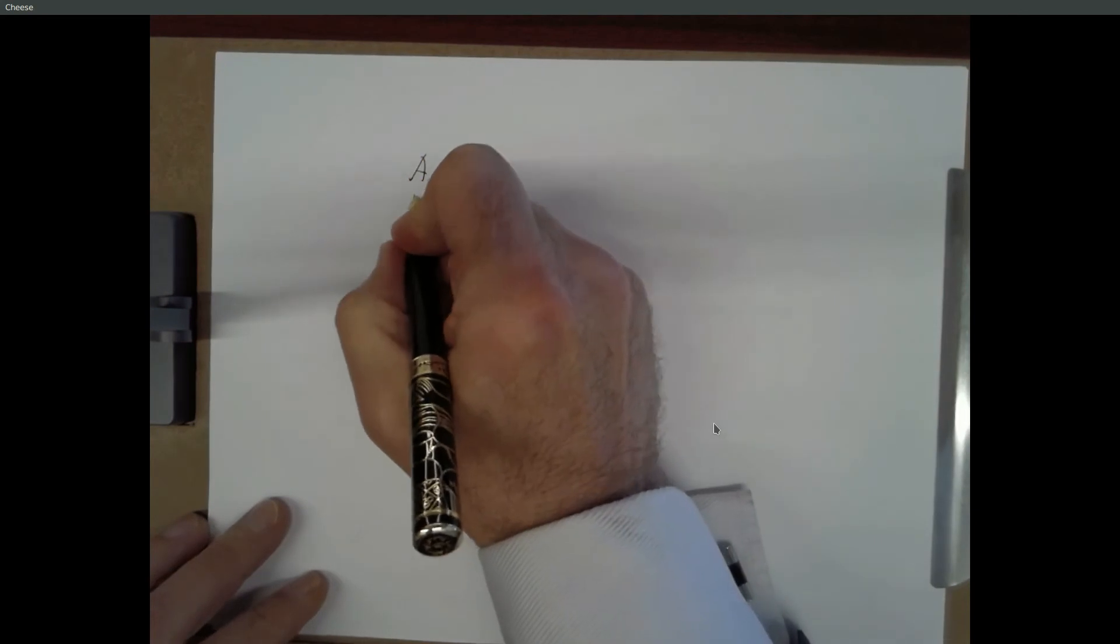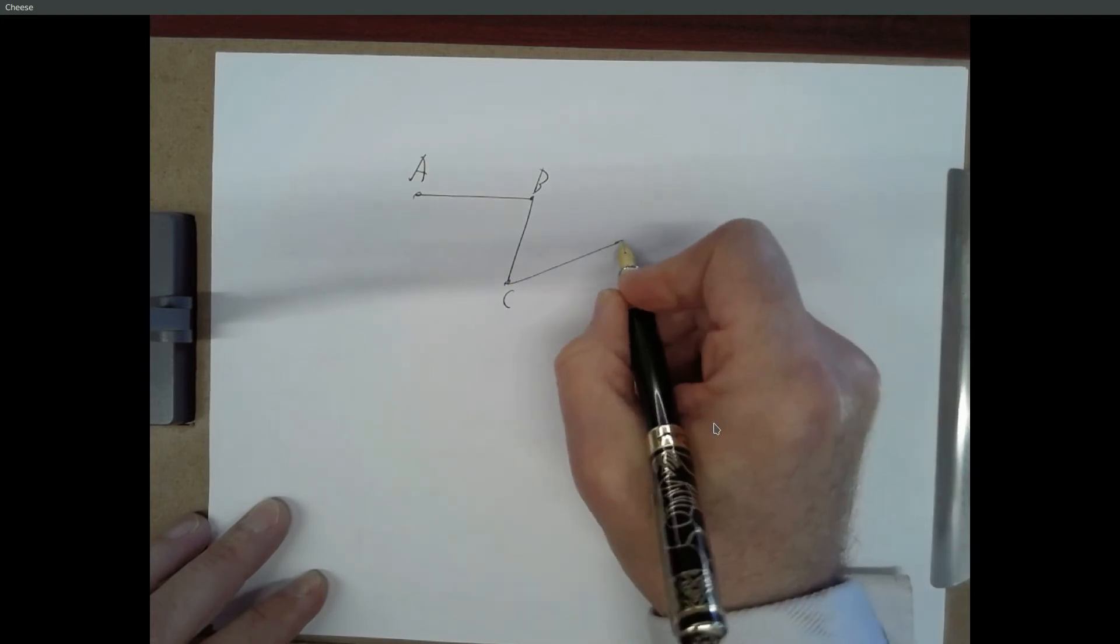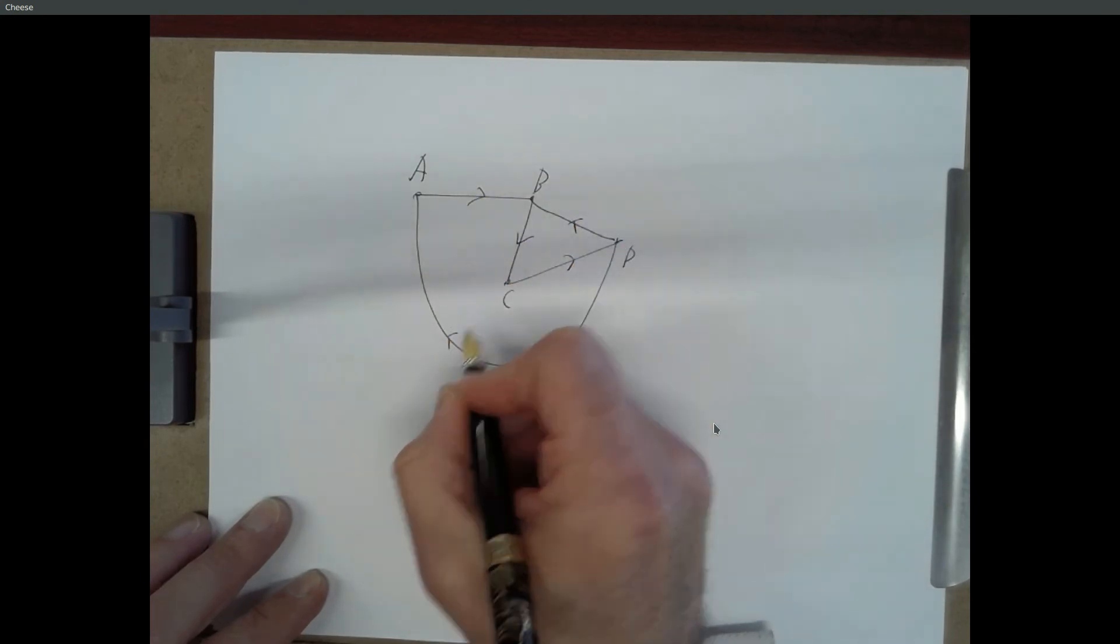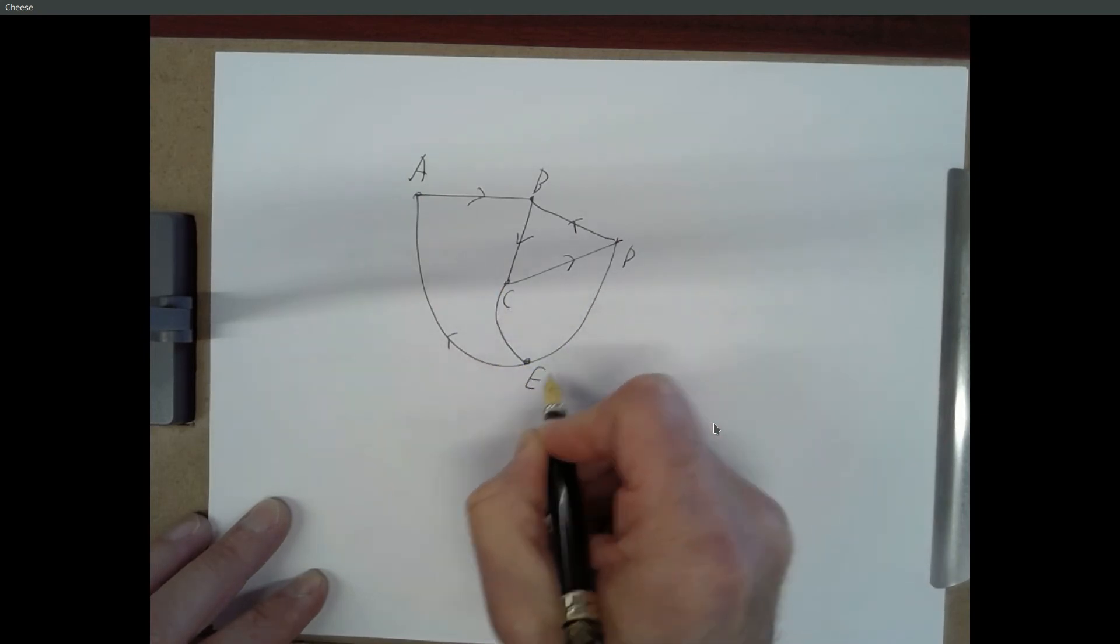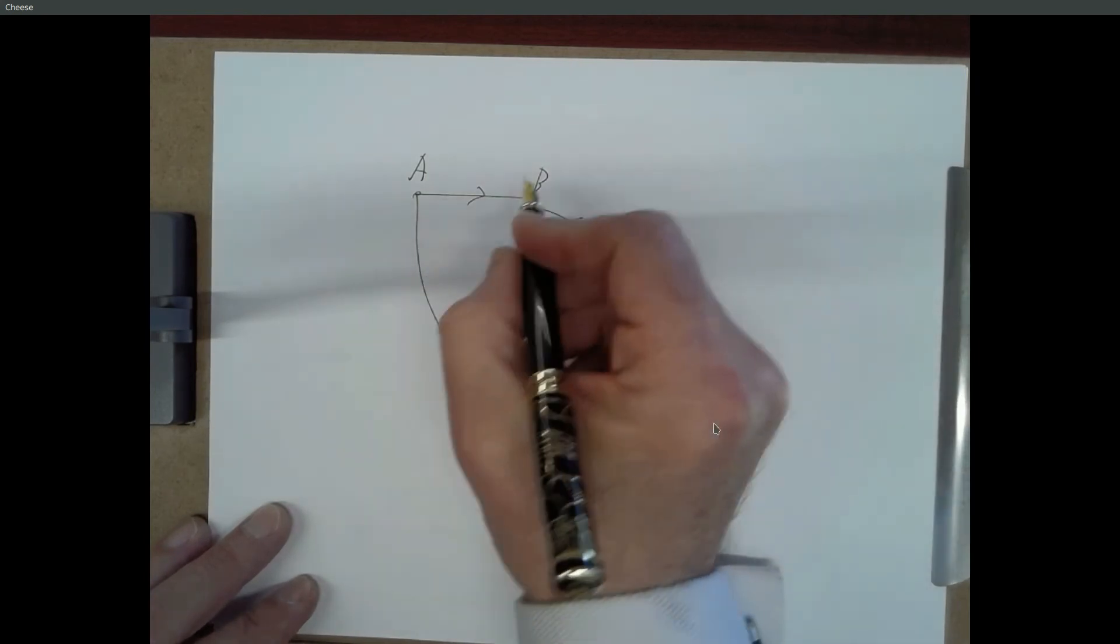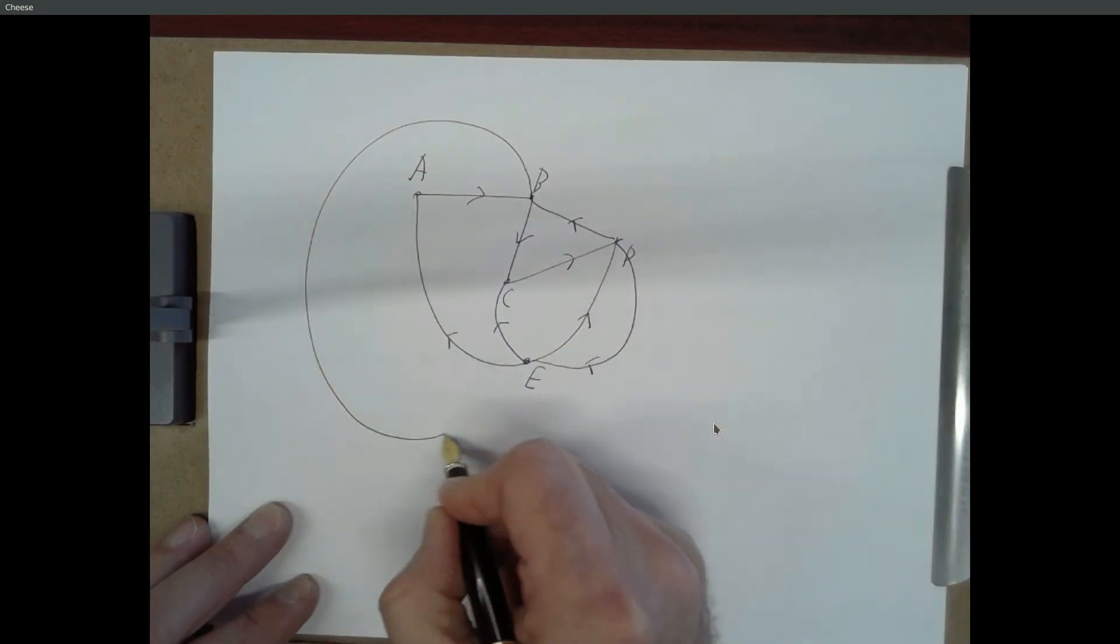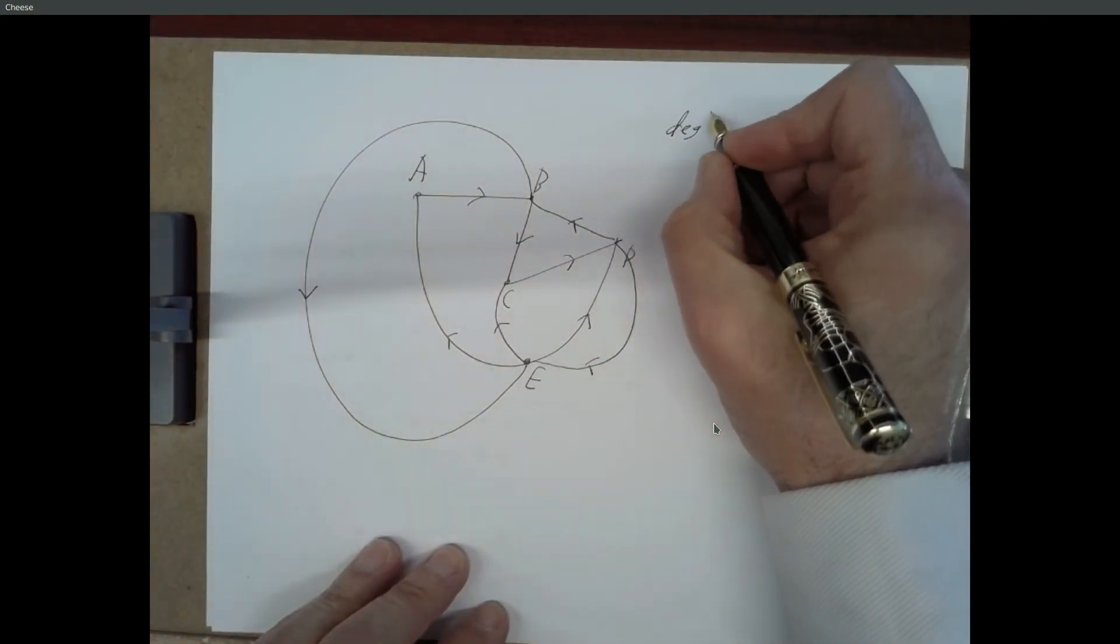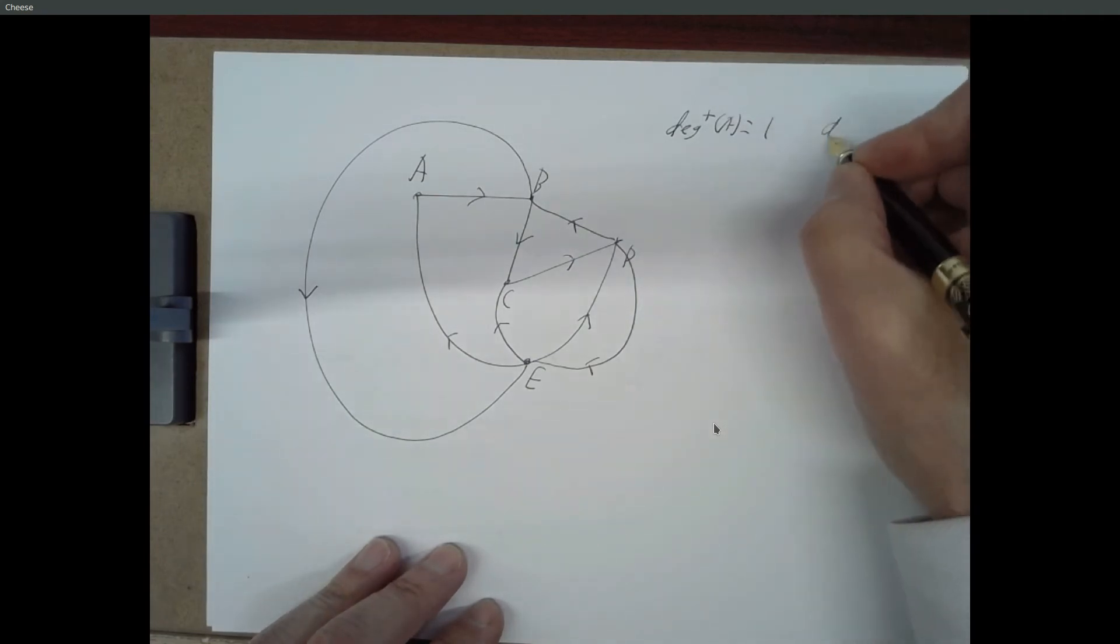So definitions are nice for precision, but they're sometimes confusing. So let's just draw a picture. Okay, so the in-degree of A is 1. We have 1 edge going into A. The out-degree of A is also 1. We have 1 edge leaving A. So, in-degree of A is equal to 1. The out-degree of A is equal to 1.